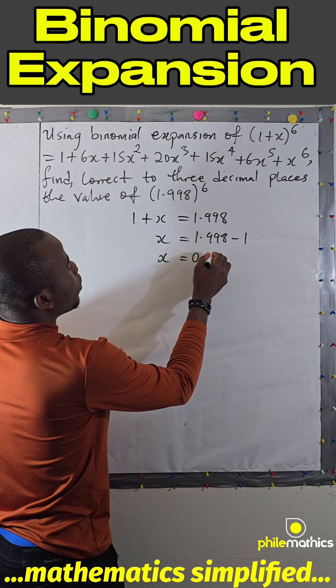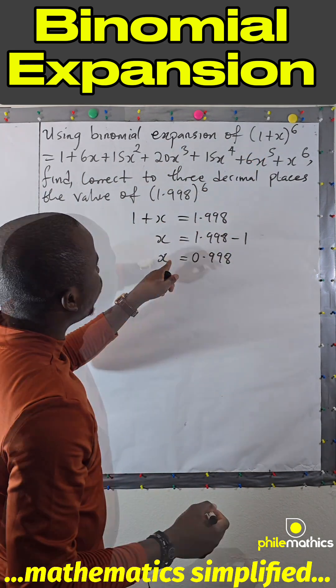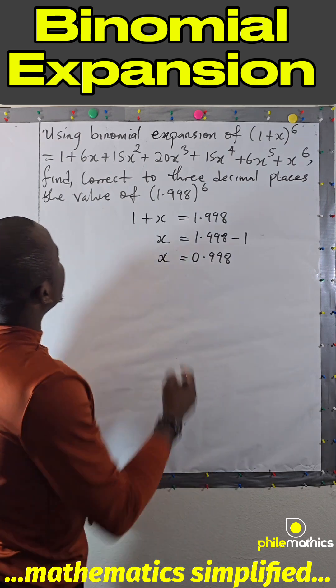So to evaluate this now, we'll substitute x as 0.998 inside the expansion.